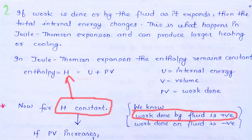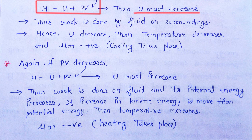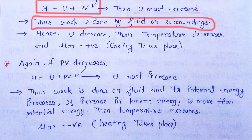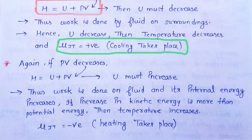अगर work done positive है तो इसका मतलब है work done by fluid; अगर work done negative है तो work done on fluid। Case 1: अगर pv increase होता है क्योंकि work done by fluid है, तो h constant रहने के लिए u को decrease होना पड़ेगा। Thus work is done by fluid on surroundings, hence internal energy decrease होगी, μ_JT positive होगा और वहाँ cooling होगी।